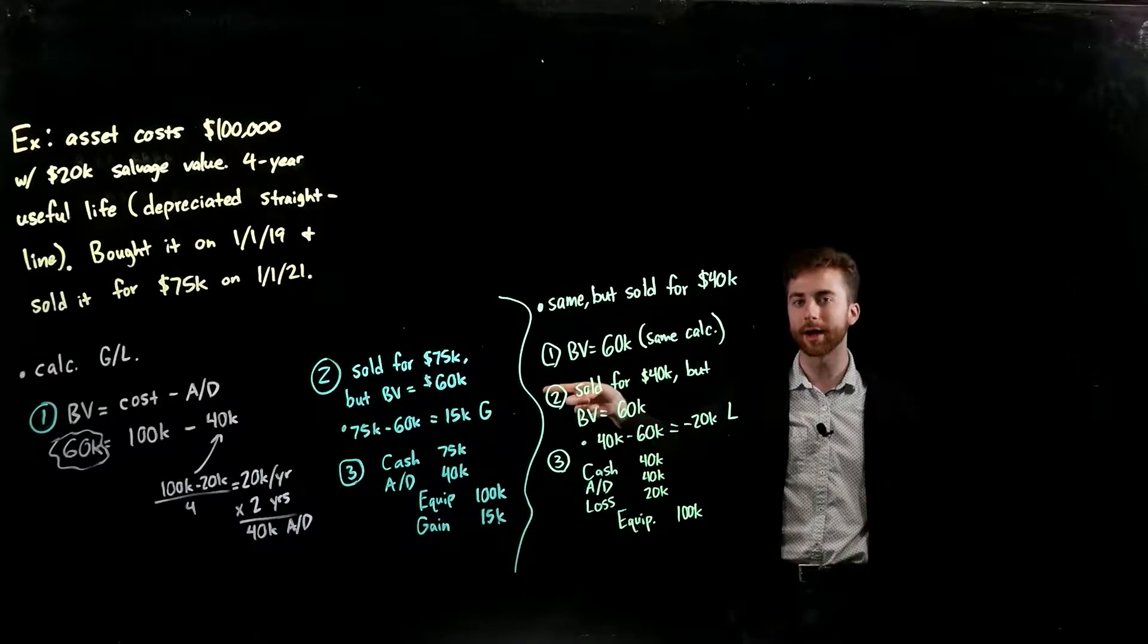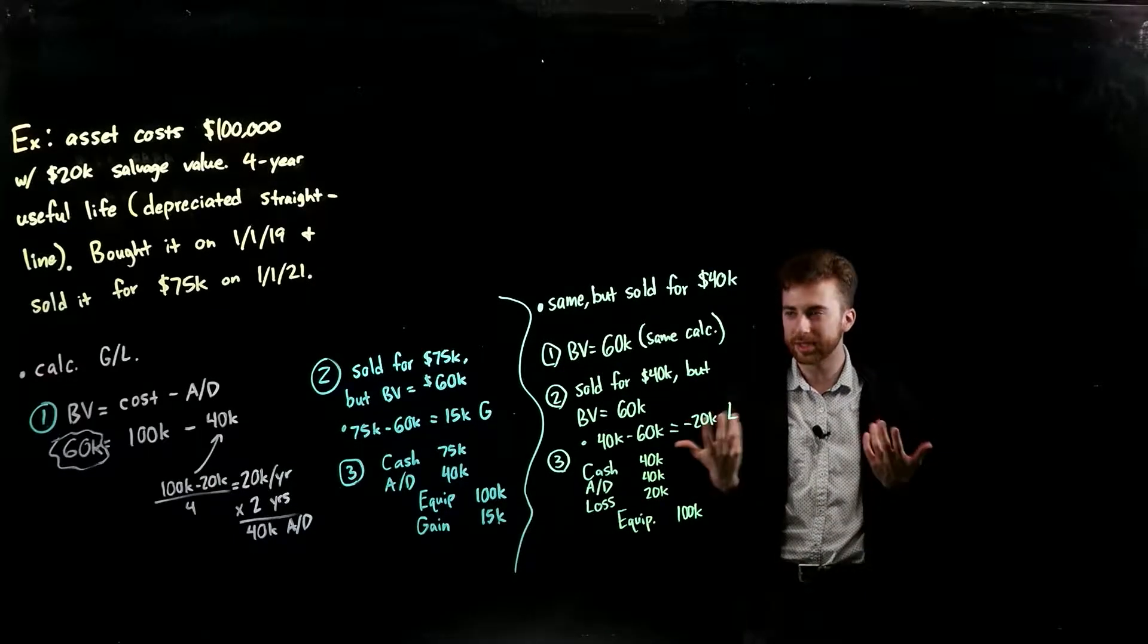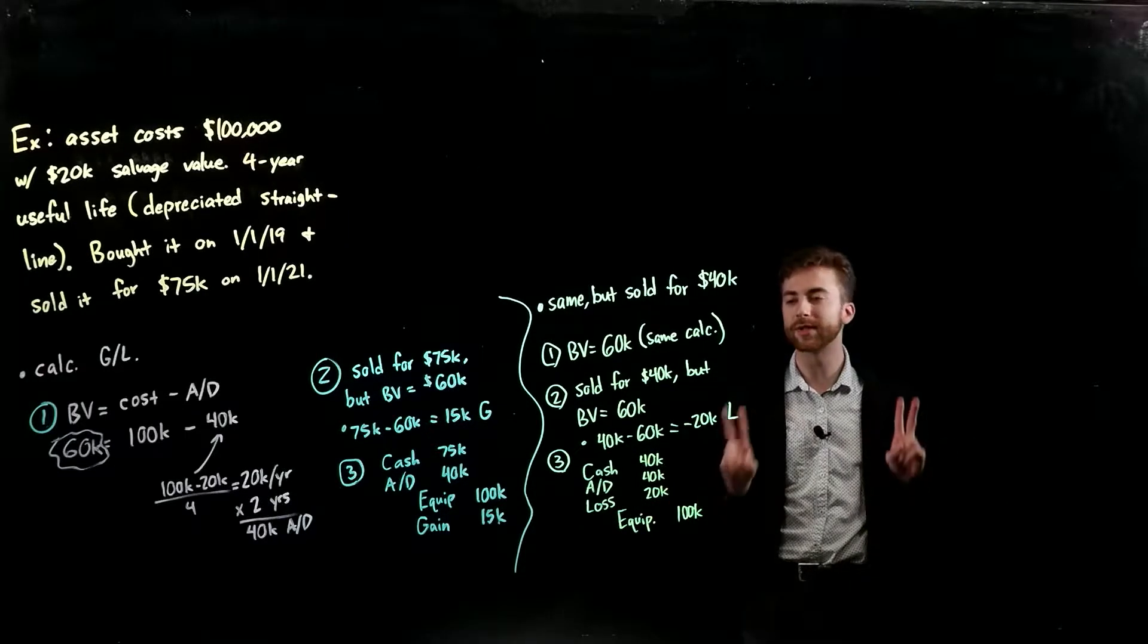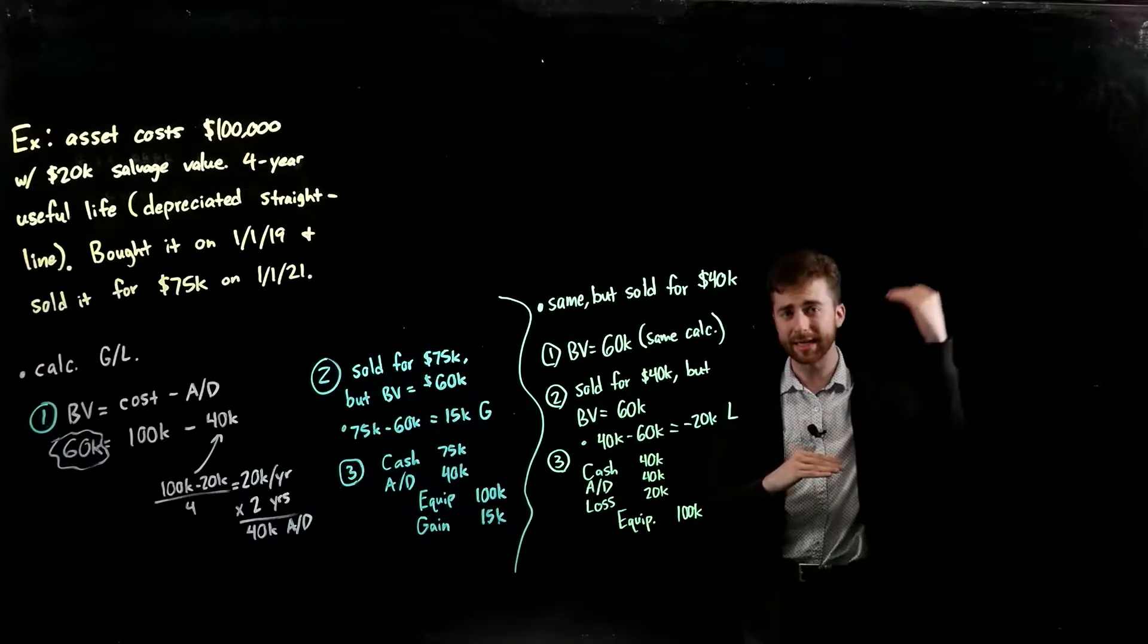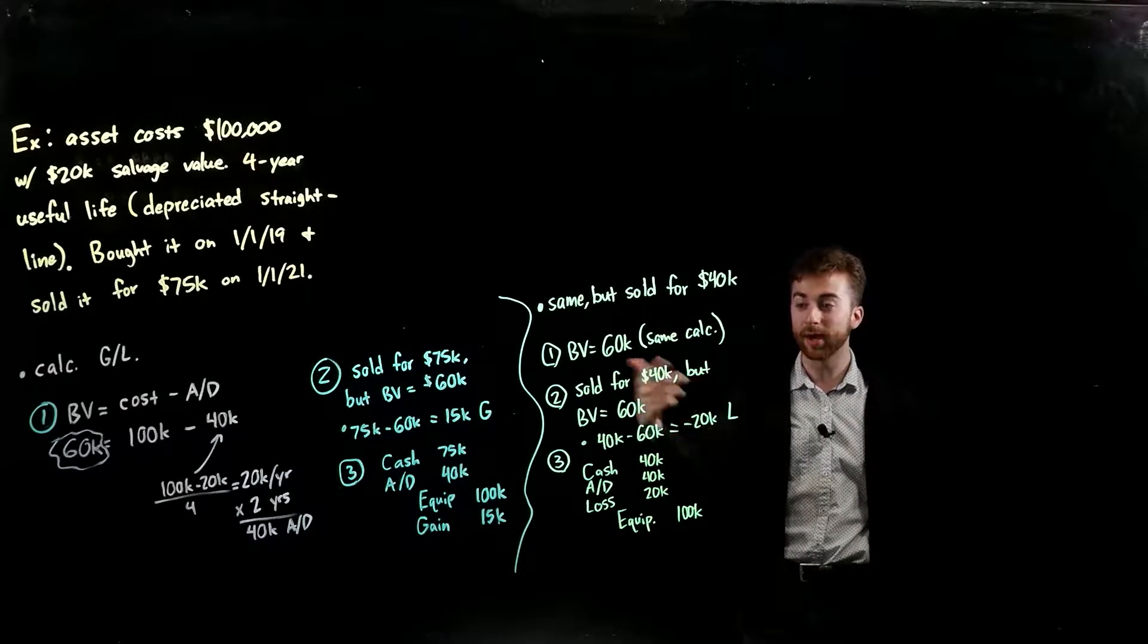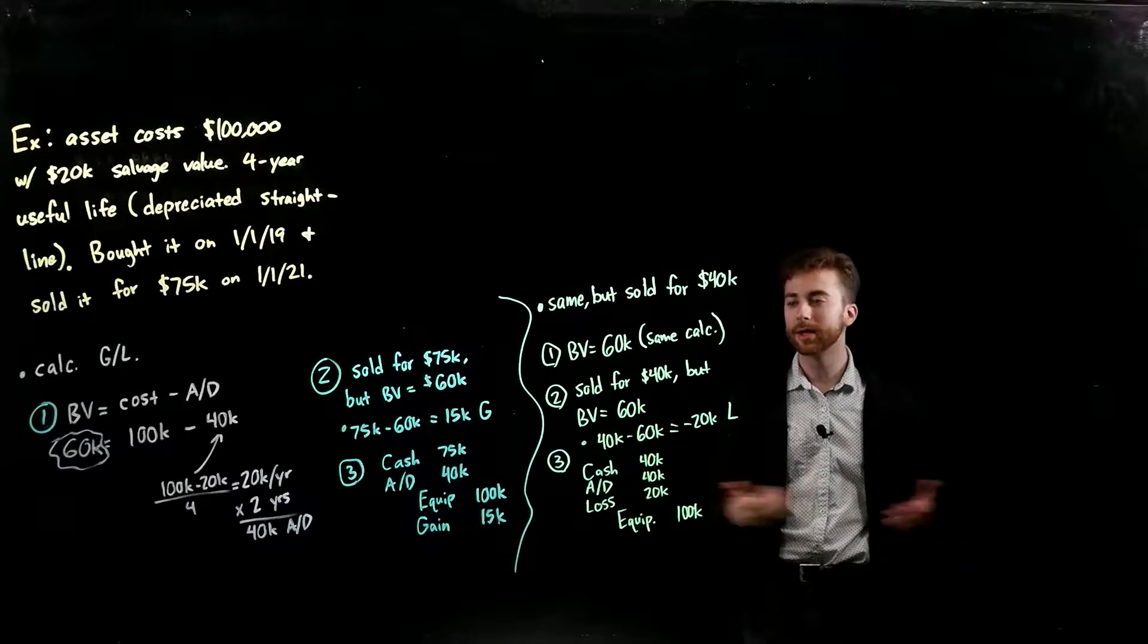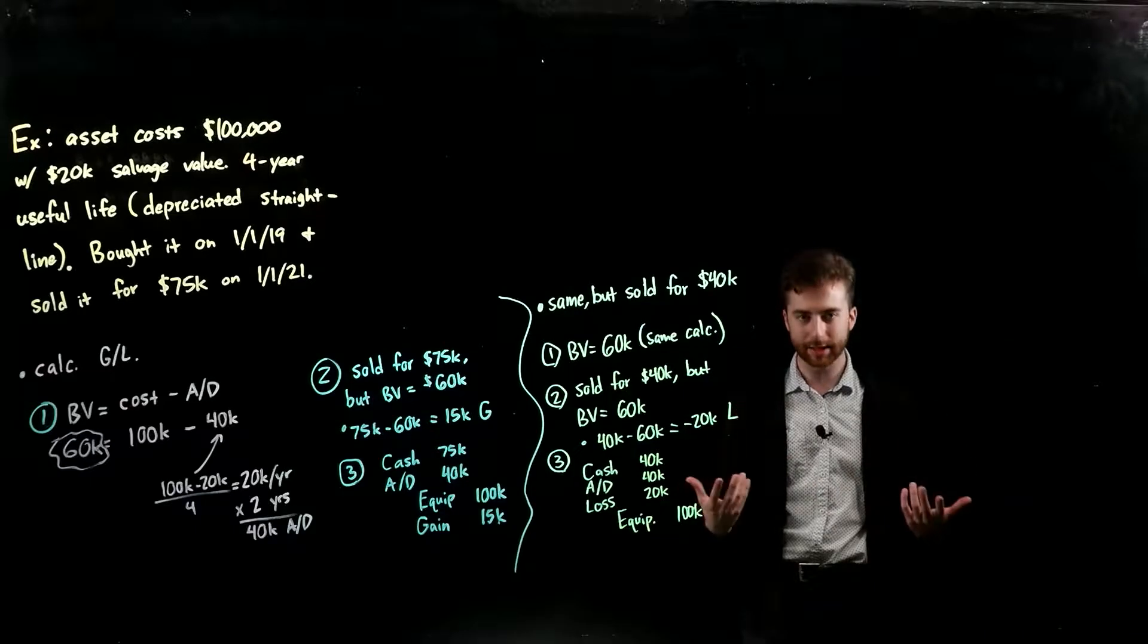The second step, we're just saying we sold it for $75,000 and the book value is $60,000. So if it's worth that much on my books and then I sell it for $15,000 more, then I just take my selling price, subtract my book value, leaves me with a positive $15,000 which indicates to me that that's a gain. Because we sold it for something that's higher than our book value, it's considered a gain.